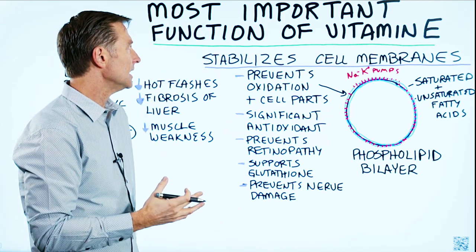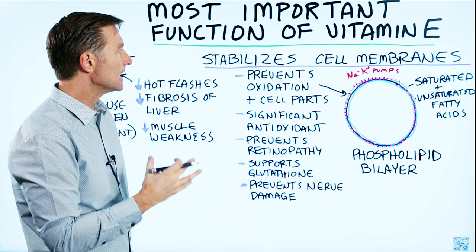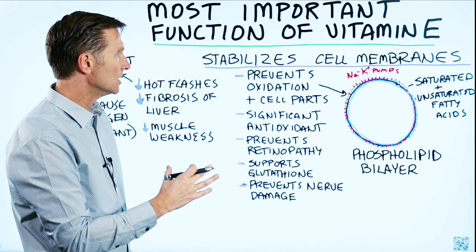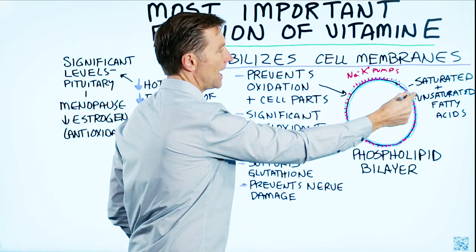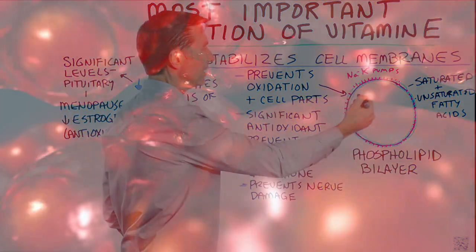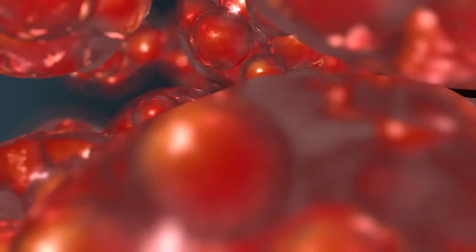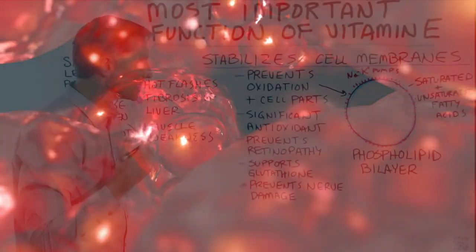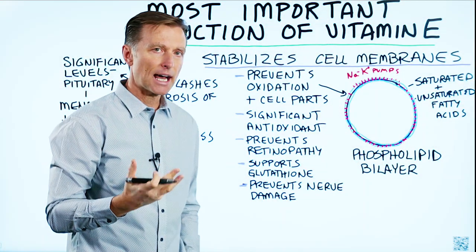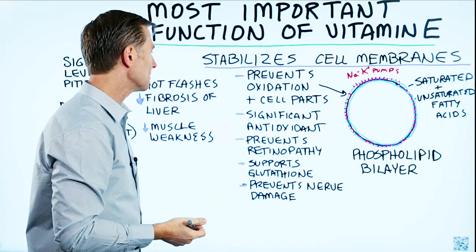Vitamin E helps prevent the oxidation of this fat layer, as well as the fat structures inside the cell. It's a significant antioxidant, and it does work with selenium as well.